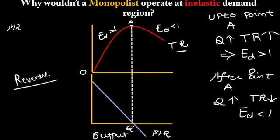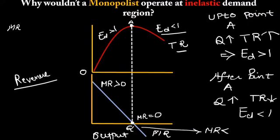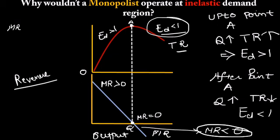You can observe that until point A, where elasticity of demand is more than 1, marginal revenue is positive. When we cross point A, the elasticity of demand becomes less than 1. At point A, marginal revenue is touching the x-axis, so it equals zero. After this point, marginal revenue becomes negative. In the region where elasticity of demand is less than 1, marginal revenue is negative, and no monopolist would want negative marginal revenue. This is the reason why a monopolist will not operate in the inelastic demand region.